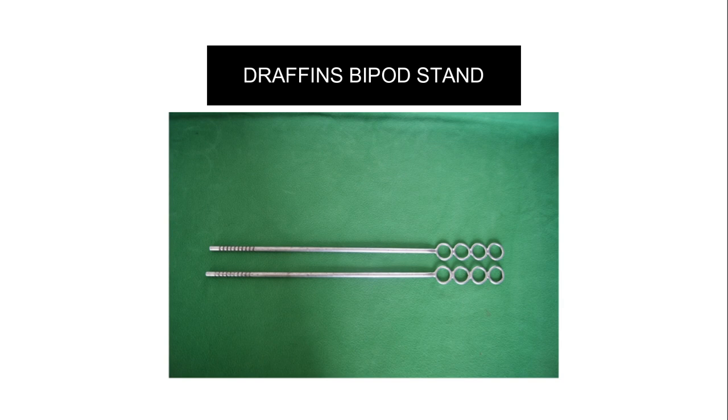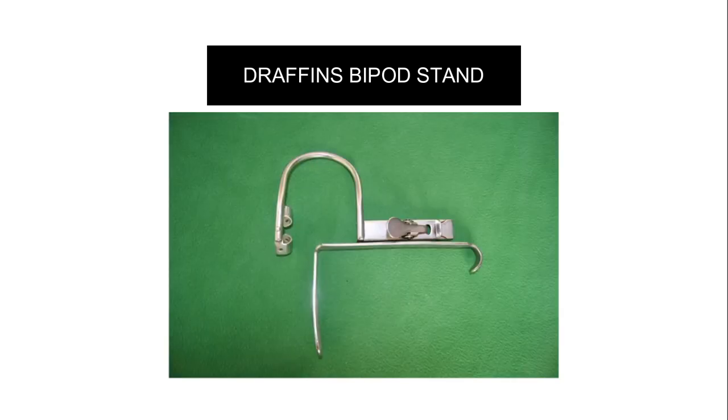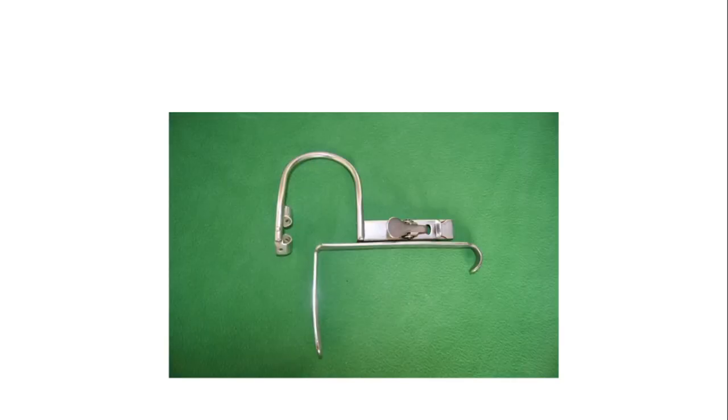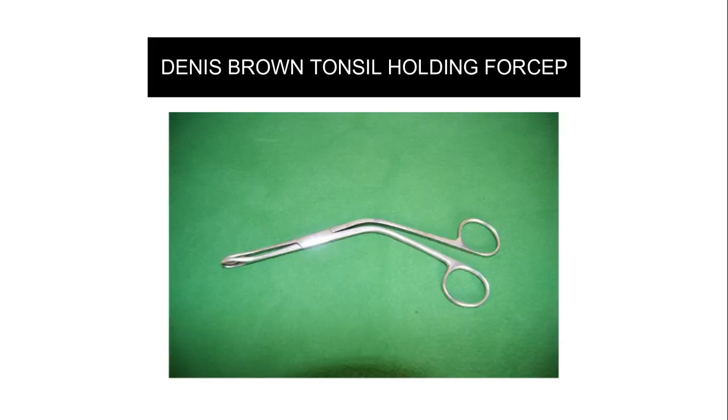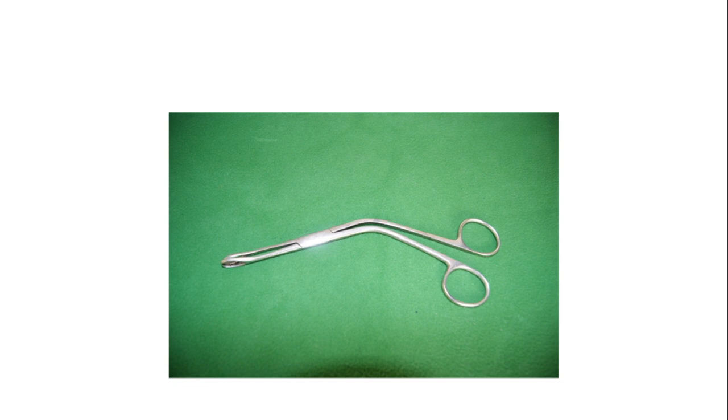This is the Draffin's bipod. Going back — this is the Boyle-Davis mouth gag, and this is the tonsil holding forceps. We move it in between the tonsil and the anterior pillar so that we get a plane between them, where we make an incision between the anterior pillar and the tonsil.